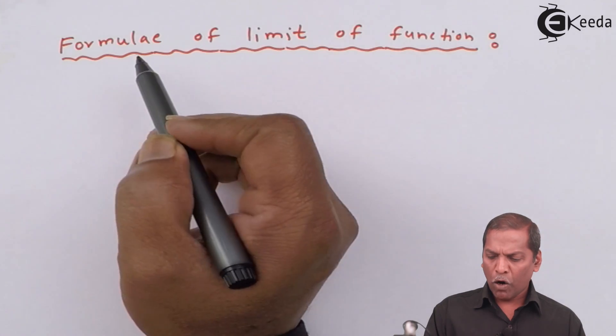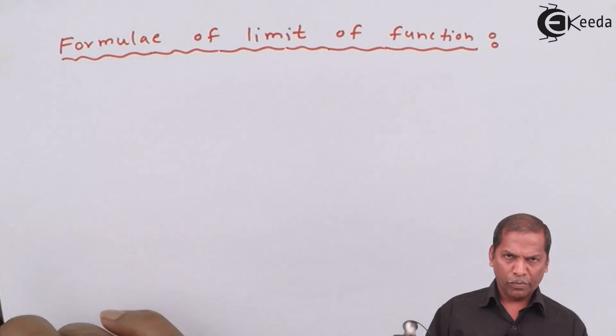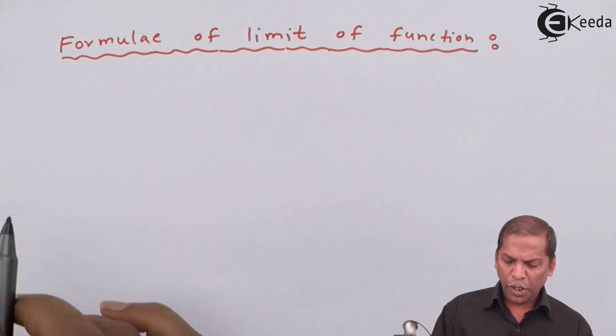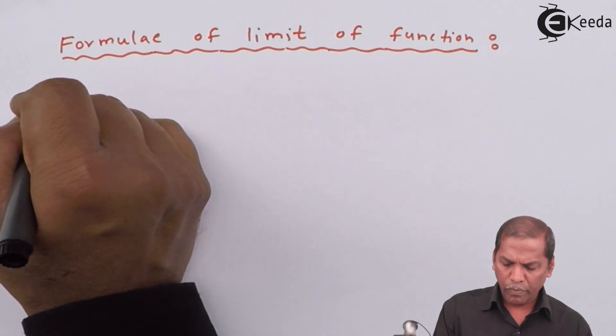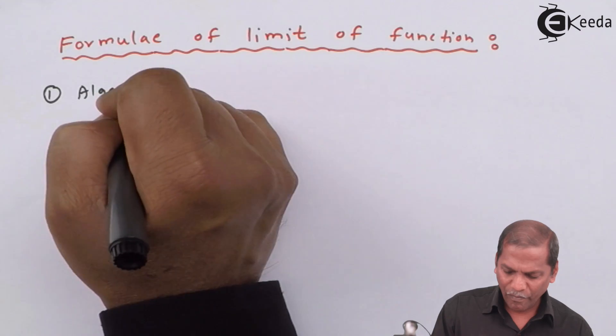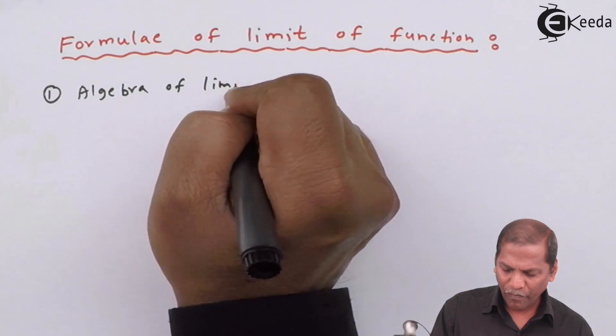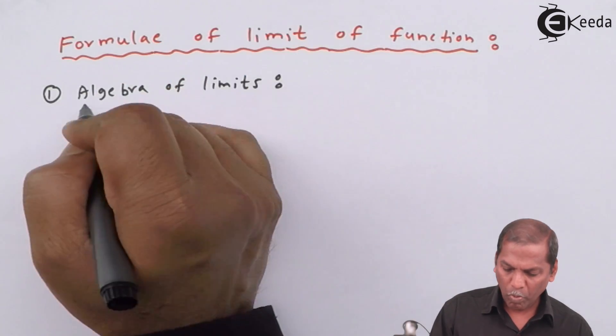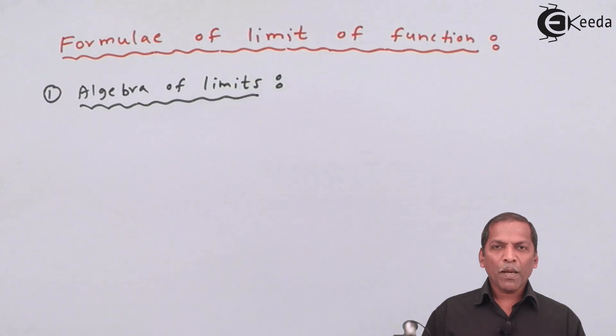So formulae of Limit of Function. This includes number 1. Algebra of Limits includes totally 9 formulas which are given as follows.